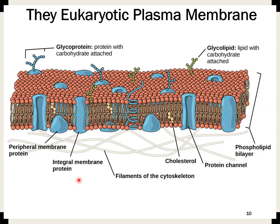Looking at the fluid mosaic model figure from the perspective of transport mechanism, you can see that different molecules like cholesterol are embedded in the plasma membrane, and there are glycolipids and glycoproteins with carbohydrate chains. These carbohydrates function to attach different substances which need to be moved inside the cell, and different protein channels let various substances pass through the cell membrane.